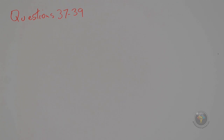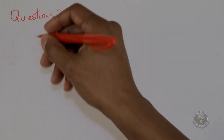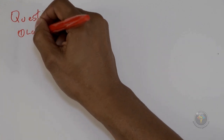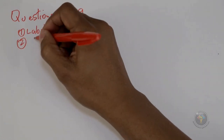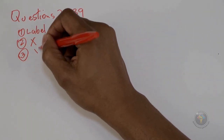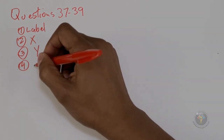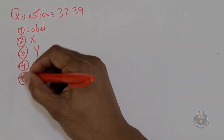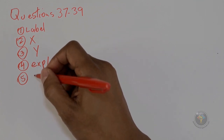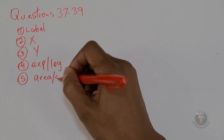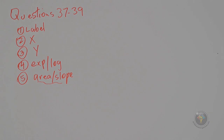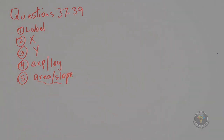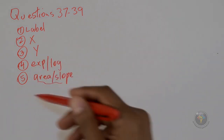Moving on to questions 38 and 39. When you see a graph, I suggest the following approach: first look at how it's labeled, next go for the x-axis, then the y-axis. Check whether anything is exponential or logarithmic about the graph. Finally, consider what the area under the curve or the slope would give you — you can determine that from the units of the x and y axes. If you do this as a routine, it only takes a few seconds.